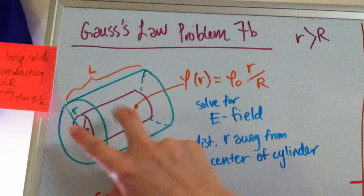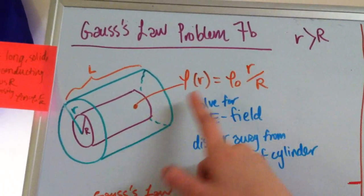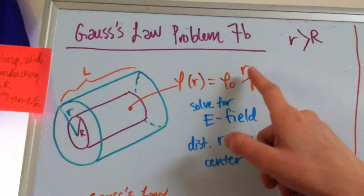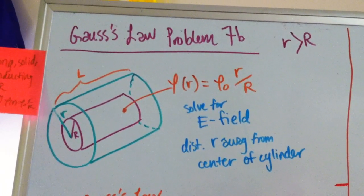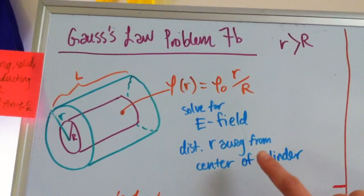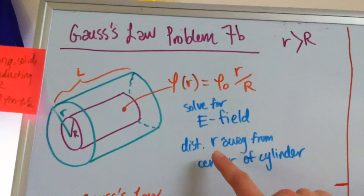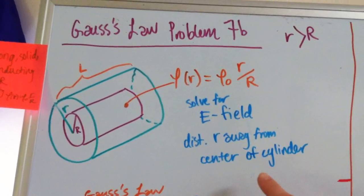and it has a length L, and it has a charge density of rho naught times little r over big R. So the problem asks us to solve for the electric field a distance little r away from the center of our charged cylinder.